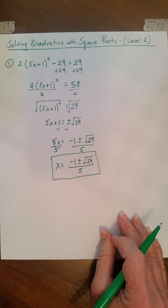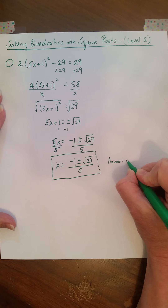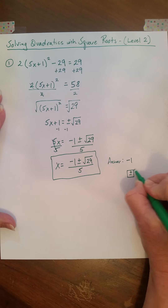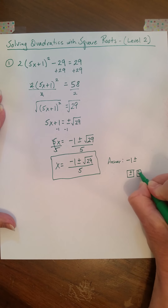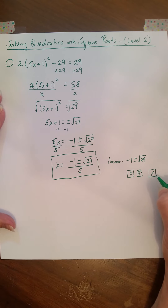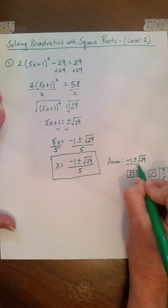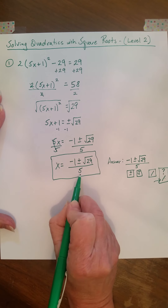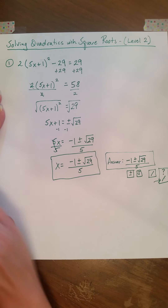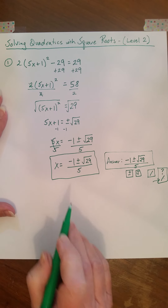That looks a little different — we've not seen an answer like that before, but that is the correct answer using radical form, using square root form. When you enter this on Delta Math, first you're going to put in negative 1, and then you're going to choose the plus or minus option. Then you're going to choose the square root option and type in 29, then you'll hit the divide-by key — the slash on your laptop, it's underneath the question mark. That indicates divide by, and it'll give you a division bar. Then you're going to divide by 5. That's going to be your answer. If you have any questions about how to submit your answer, please feel free to text me.